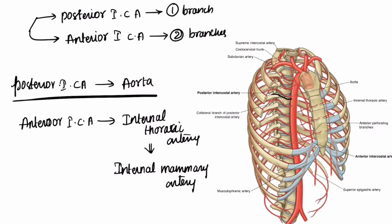In the diagram, these are the posterior intercostal arteries arising from the aorta. This is the aorta here, and these are the posterior intercostal arteries. The internal thoracic artery is also shown here, arising from the subclavian artery.